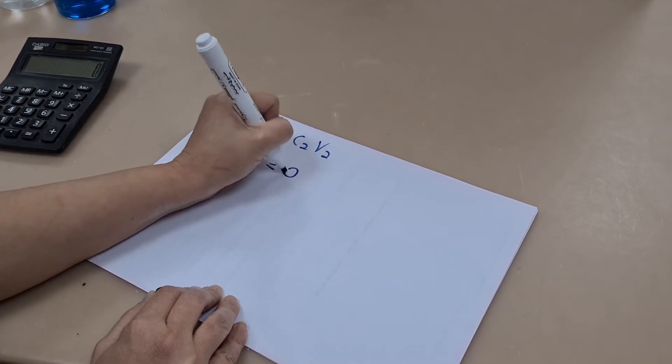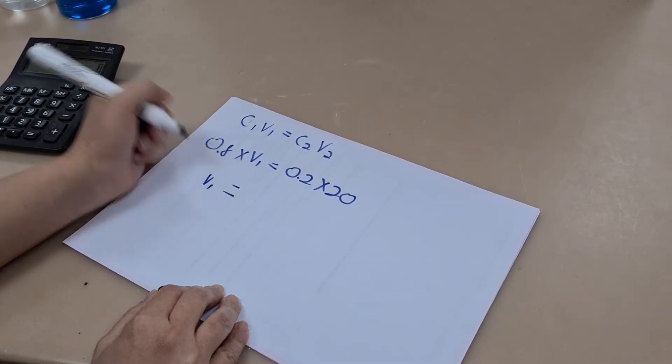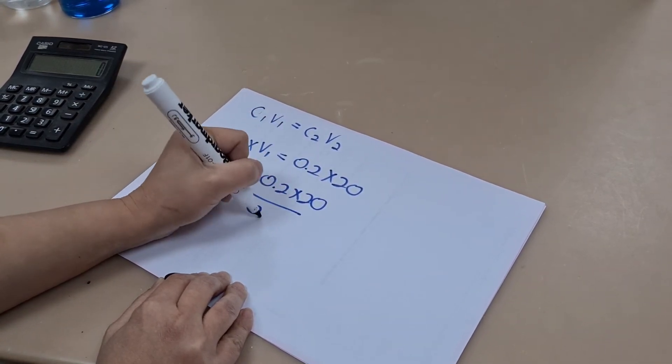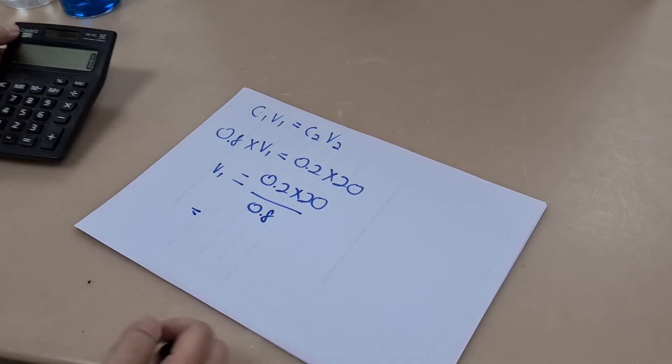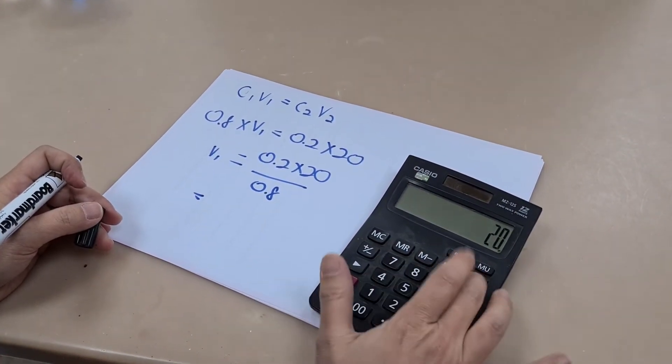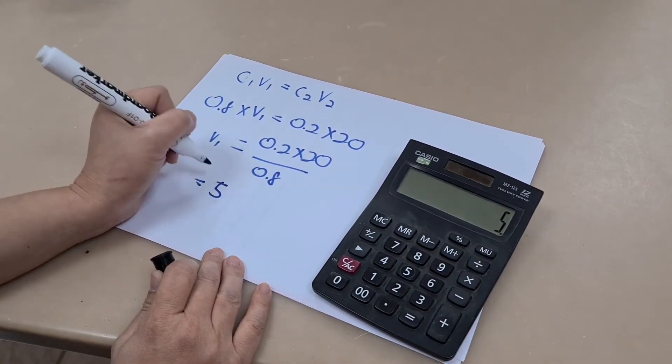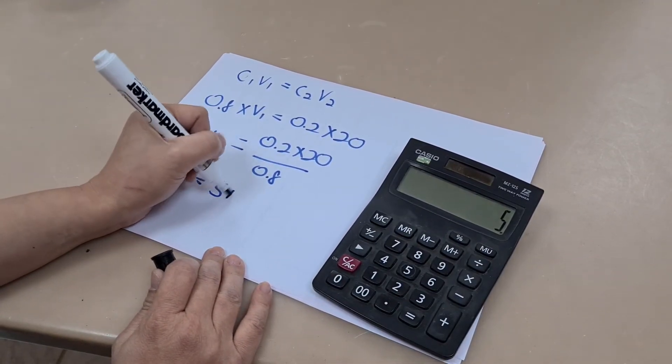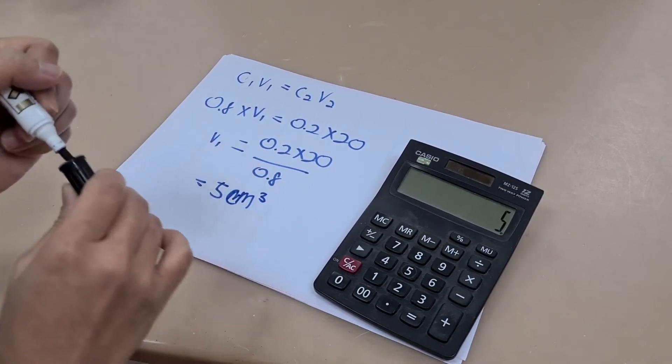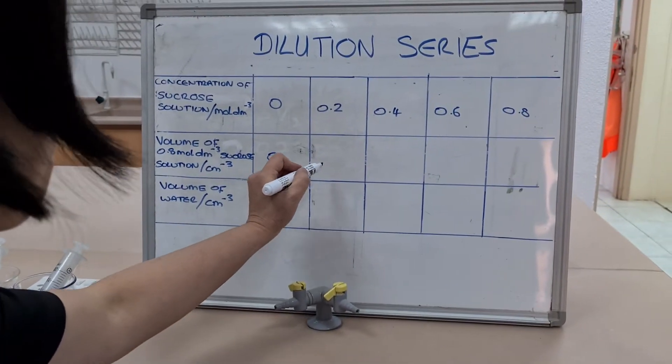Throughout these calculations, our C1 is always going to be 0.8 because that is the concentration of our stock solution. Likewise, our V2 is always going to be 20. Why? Because in each dilution, we're trying to make 20 mils. And remember that V1 is the volume that we want to remove from our stock solution to then add water to.